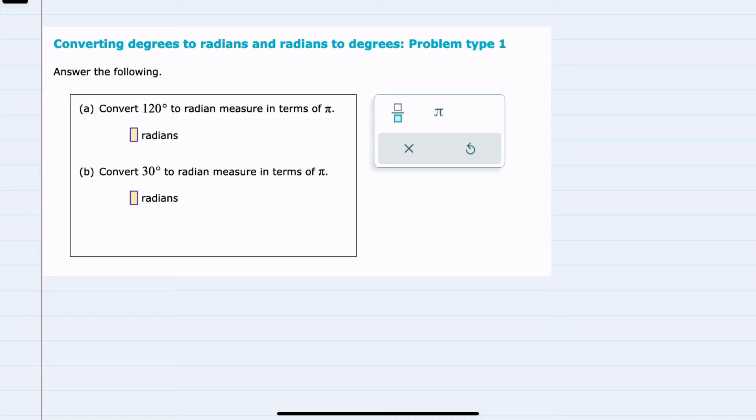For both examples here, we are converting degrees to radians, but the process is really the same both ways.